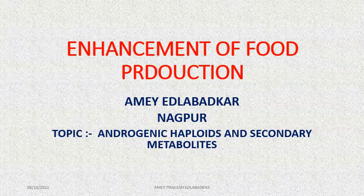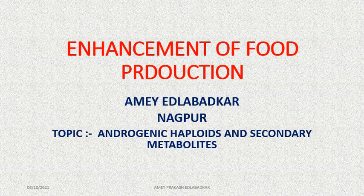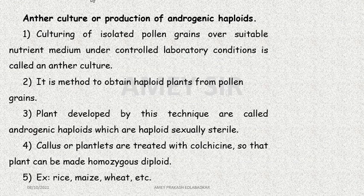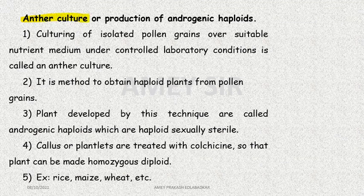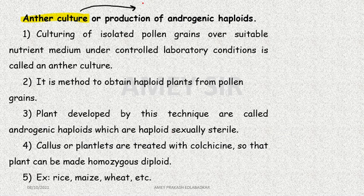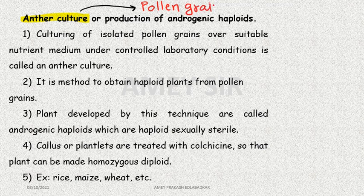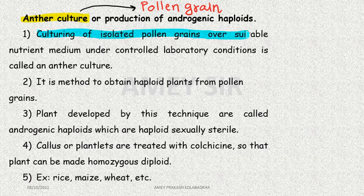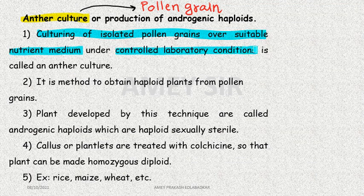The point is production of androgenic haploids or anther culture. One thing you should remember is that in anther culture, the entire anther is never used as explant. In this case, we are using pollen grain as an explant. The definition states: culturing of isolated pollen grains over suitable nutrient medium under controlled laboratory conditions is called anther culture.